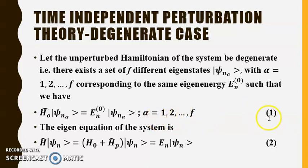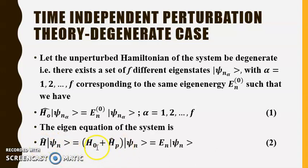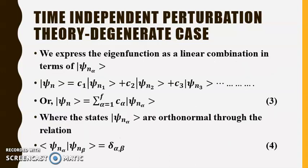The eigenvalue equation of the state is H|ψ_n⟩ = E_n|ψ_n⟩, where we write H = H^0 + H', the perturbed Hamiltonian, operating on |ψ_n⟩ gives E_n|ψ_n⟩. This is equation 2.